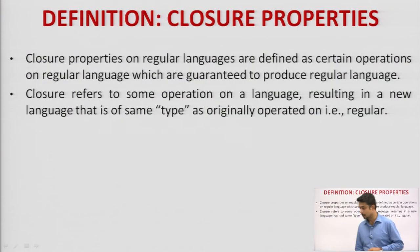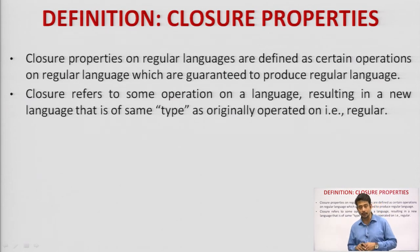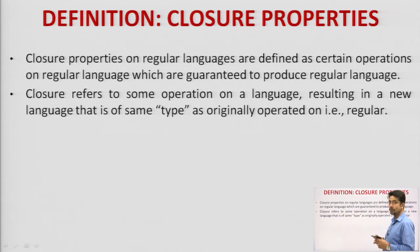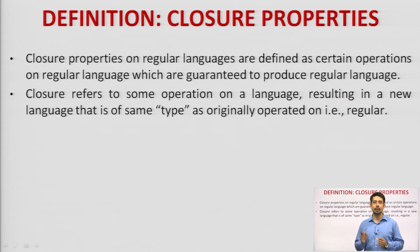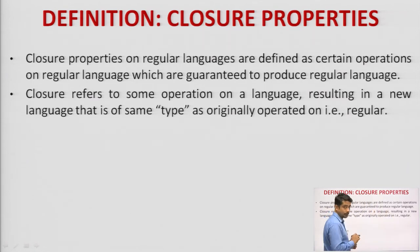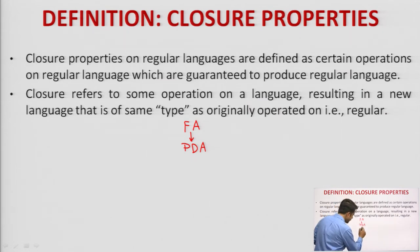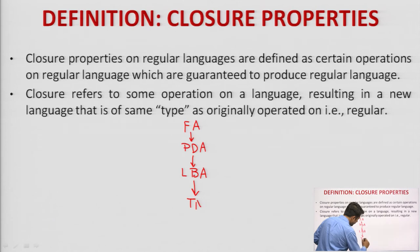Closure properties on regular languages — let me give you a hierarchy so you can understand. There is a proper hierarchy: first comes Finite Automata, then Push Down Automata, then Linear Bounded Automata, and finally Turing Machine. These are all machines, and machines generally accept a particular set of strings.